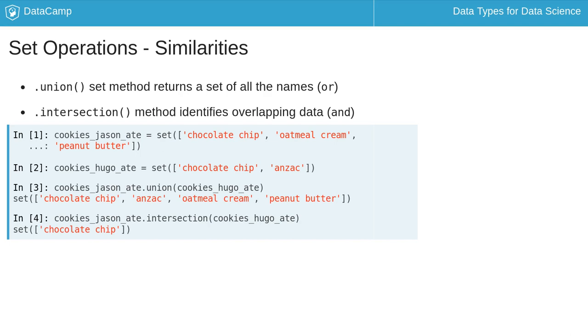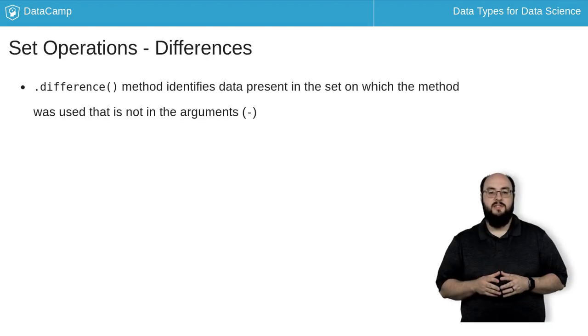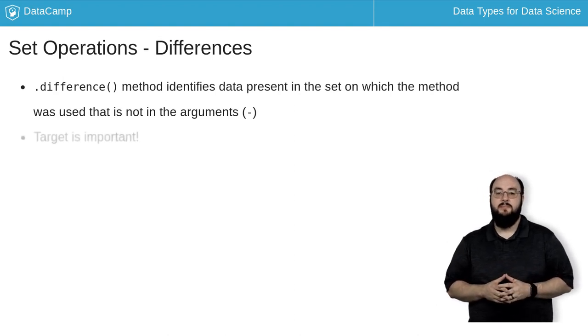While these two methods help us find commonality, sets also provide methods to help us find differences. We can use the difference method, which accepts a set to find elements in one set that are not present in another set. The target we call the difference method on is important, as it will be the basis for our differences.